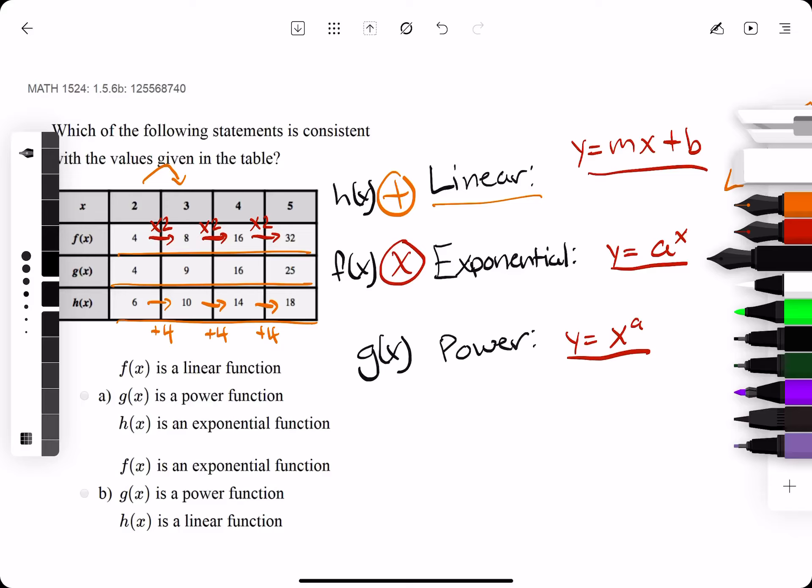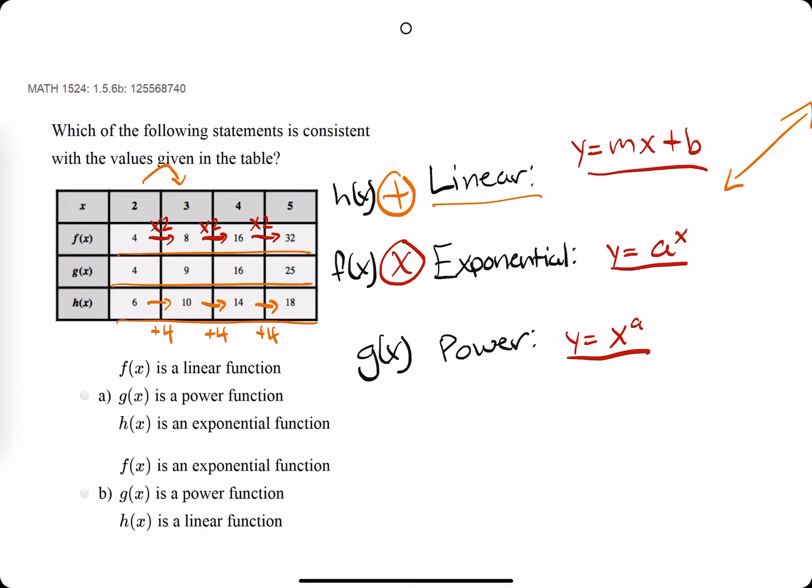We're looking at g to be the power function. So a power function is x to the a, where a is some number. So we have in the table 2, 4, 3, 9, 4, 16, 5, 25. So naturally, you may start to see a pattern emerge: 2, 4, 3, 9, 4, 16, 5, 25. They're all squares of those numbers.